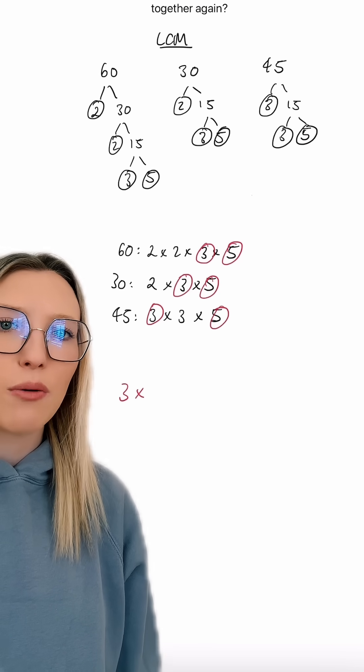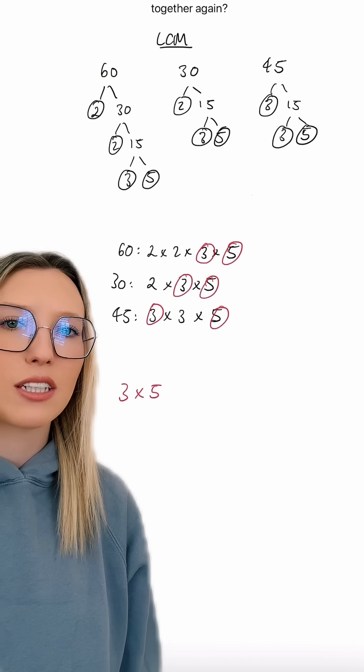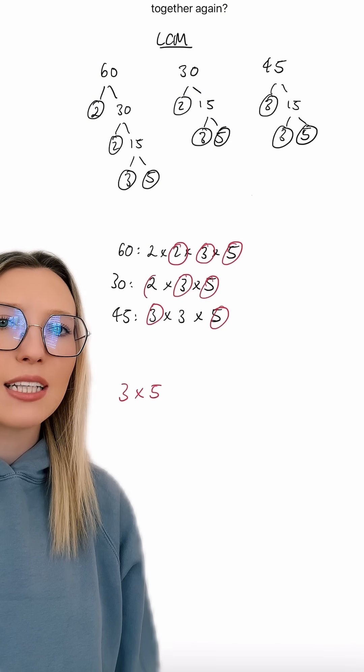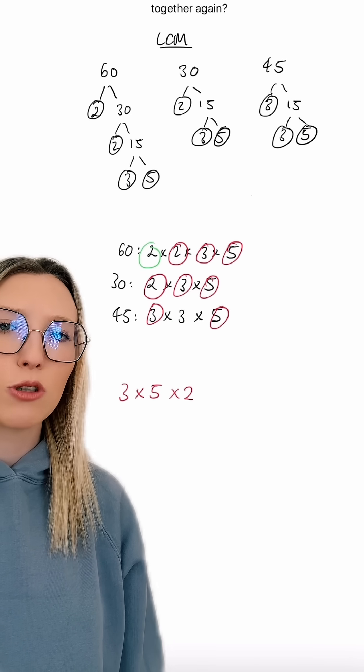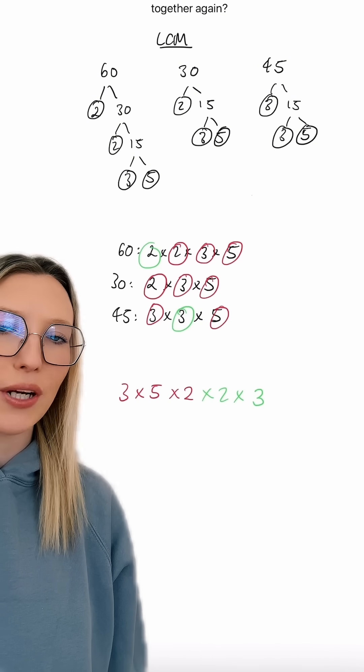So we can see we've got 3 here in each of our prime factors. So we've got 3, we've also got a 5 in each, so we can times it by 5, and we can see we've got a 2 repeated as well between 60 and 30. We then just want to multiply this by any outstanding numbers, so that's 2 times by 3.